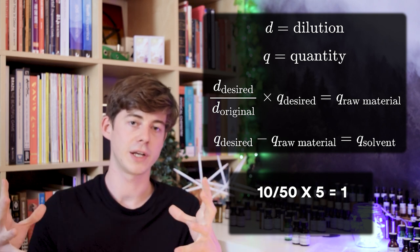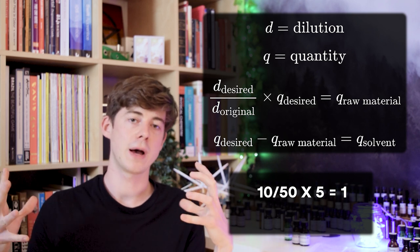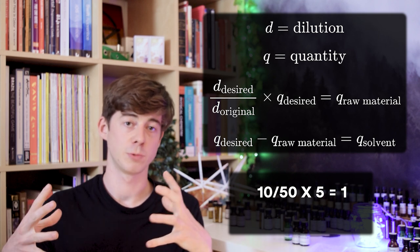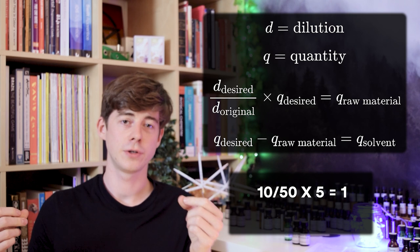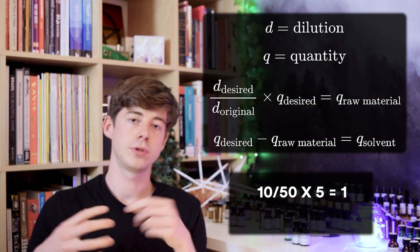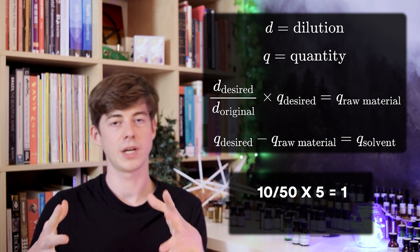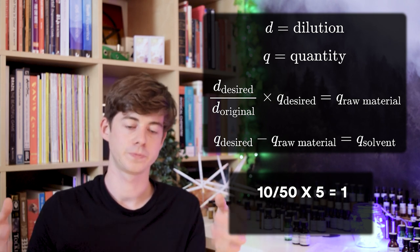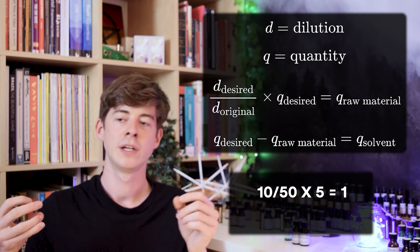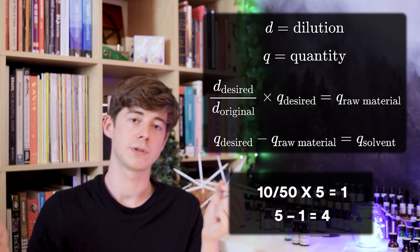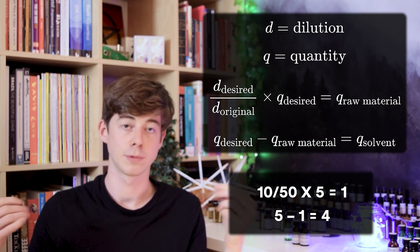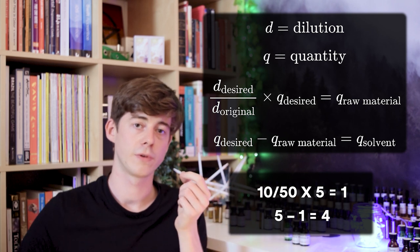Again, we take our calculated number — 0.2 — and multiply it by the desired quantity. Let's say this time we only want to make 5 grams. So we take 0.2 times 5, which equals 1 gram. That's how much of the raw material we weigh out and put into the bottle. Then to calculate the amount of solvent, take the total desired amount — 5 grams — and subtract the raw material amount — 1 gram — leaving us with 4 grams of perfumer's alcohol to add. It's really easy: one formula, and you can go from any purity of raw material to make any weaker dilution that you want.